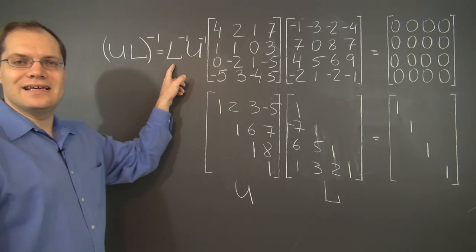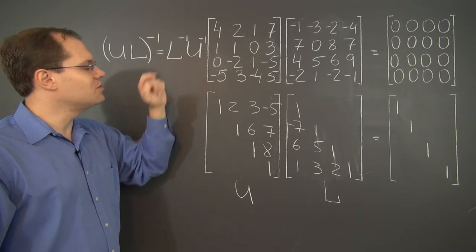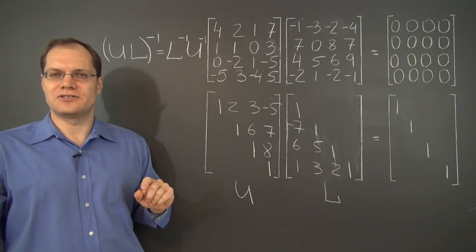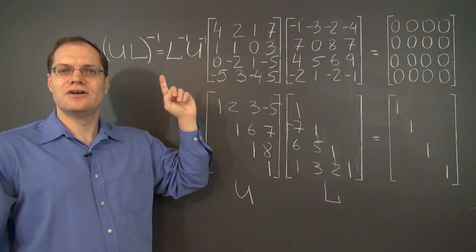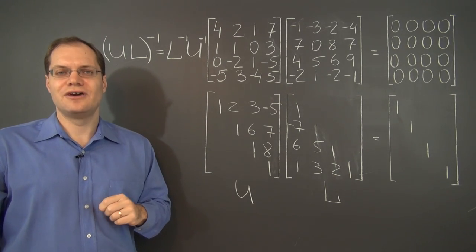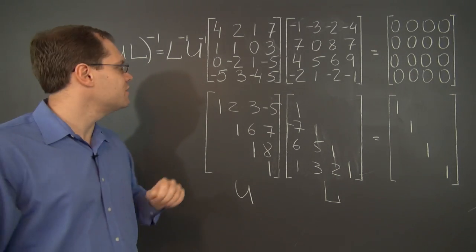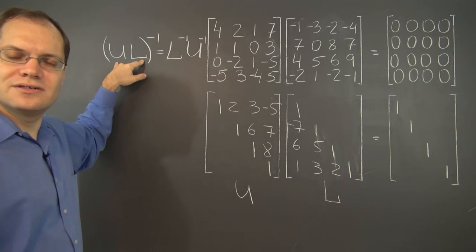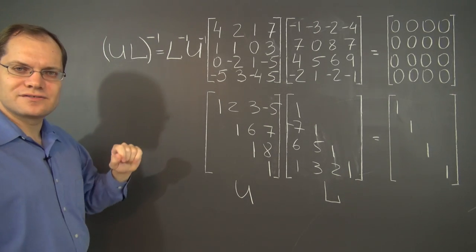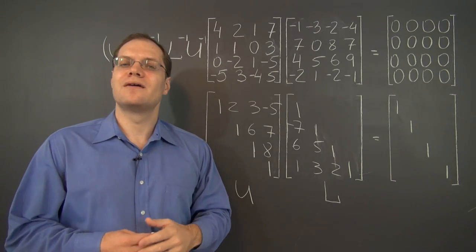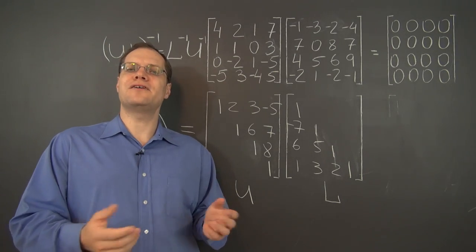And L inverse has nothing but integers in it. And U inverse has nothing but integers in it. And when you multiply two matrices full of integers, you'll get a third matrix that's full of integers. And so this matrix, its inverse, consists of nothing but integers. And there you have it.